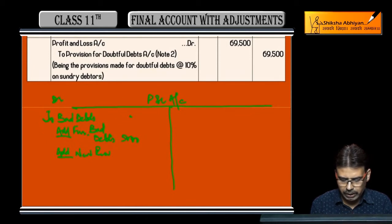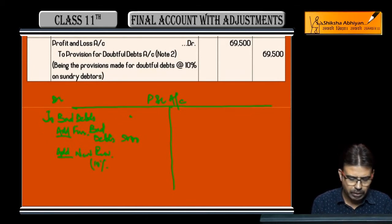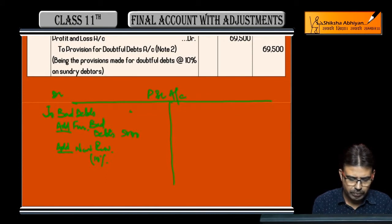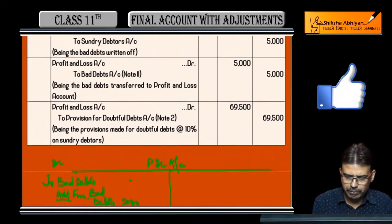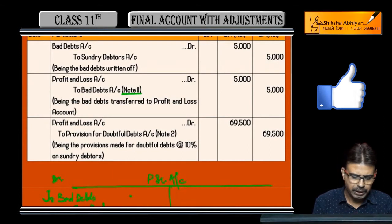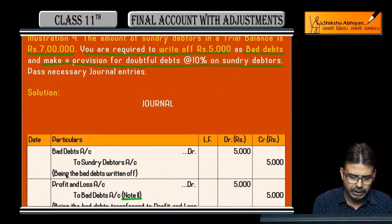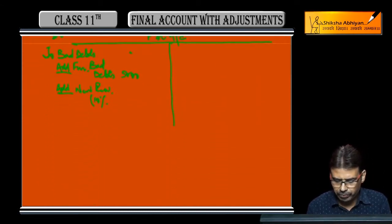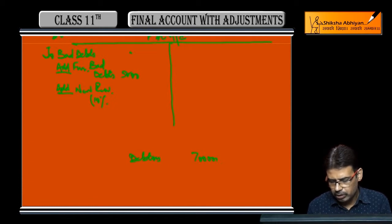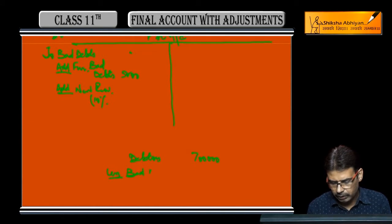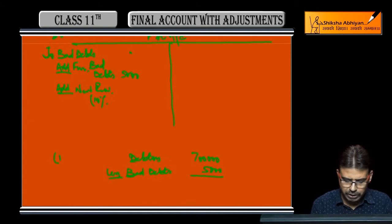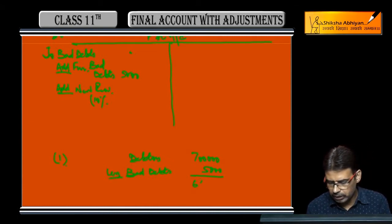Add new provision — children, please note carefully. I have written here: Note 1 — from the debtors we need to minus 5,000 bad debts. Working note number 1: Debtors 7,00,000 less bad debts 5,000 = 6,95,000.